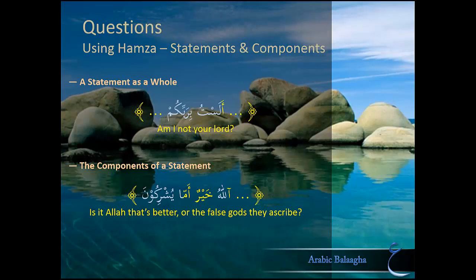An example of asking about the components of a sentence is أَلَّهُ خَيْرٌ أَمَّا يُشْرِكُونَ (Is Allah better or the gods they ascribe?). Here the question isn't asking whether a statement is true or false; rather it's asking you to pick between two options for the subject component — Allah or their ascribed gods. This can also apply to an object, an adverb, a prepositional phrase, and so on. The component you're asking about must come at the beginning of the sentence, right after the Hamza.